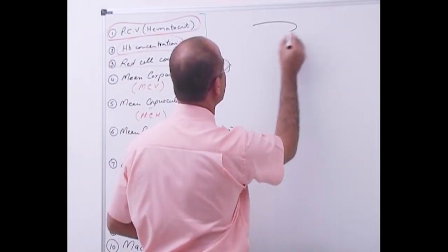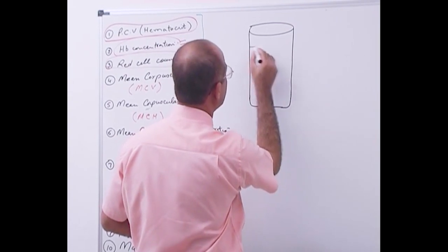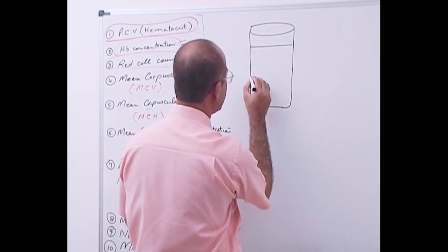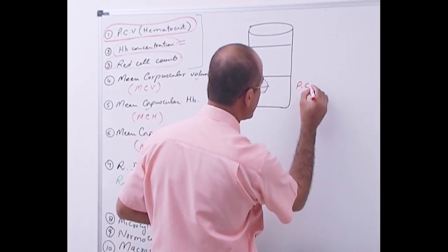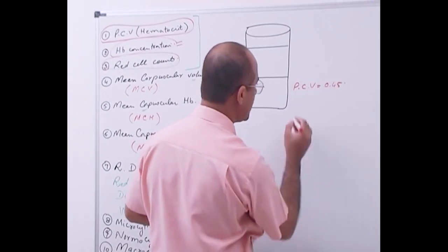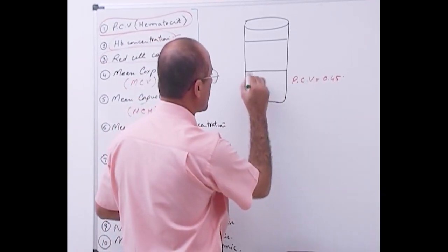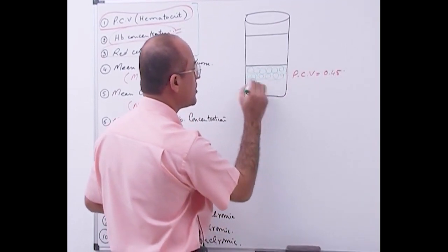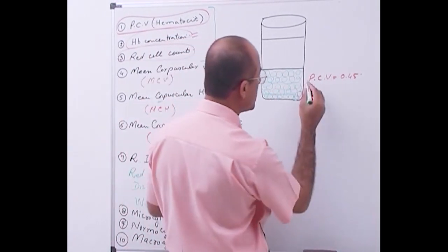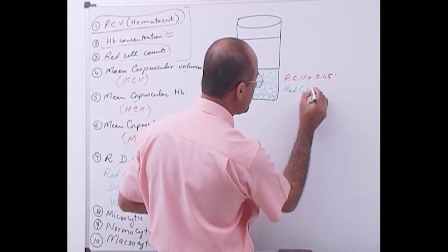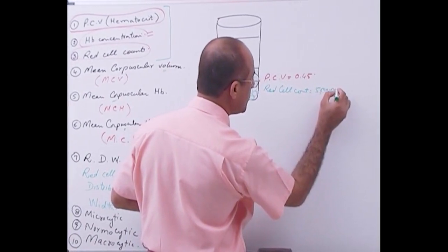This was our patient - this is the total amount of blood. The packed cell volume was 0.45. This is all red blood cells. The packed cell volume is occupied by a certain number of red blood cells. We also talked about red cell count, which was 5 million per ml.